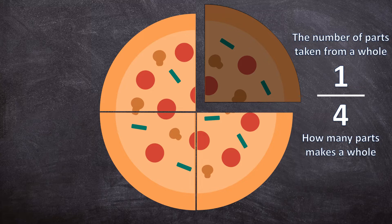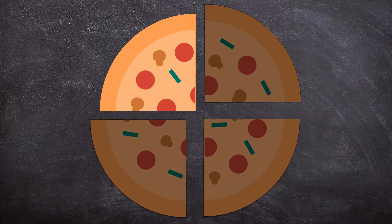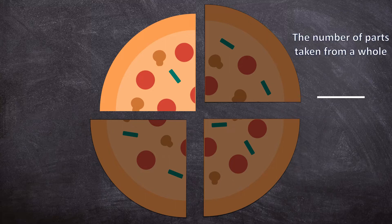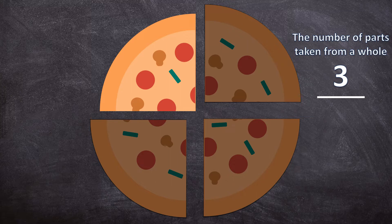Now let's say I eat another two pieces. So what fraction of the pizza did I eat now? Above the line is the number of parts taken from a whole — the number of parts I ate, that is three pieces. And underneath the line is the number of parts that make a whole pizza, that is four pieces.